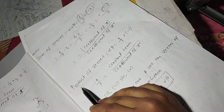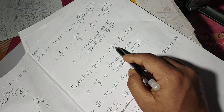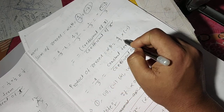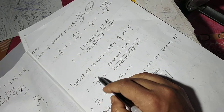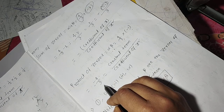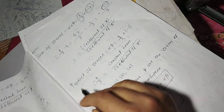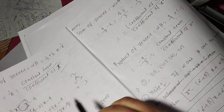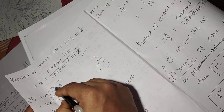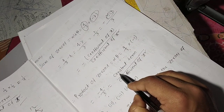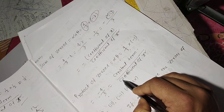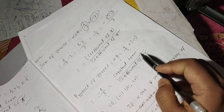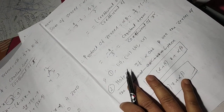Product of zeros equals alpha times beta equals 4 by 3 times minus 1 equals minus 4 by 3. Here minus 4 is the constant term and 3 is the coefficient of x squared. So product of zeros equals constant term divided by coefficient of x squared, which is minus 4 by 3. The relationship is verified.